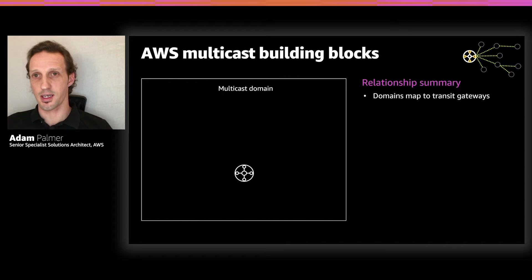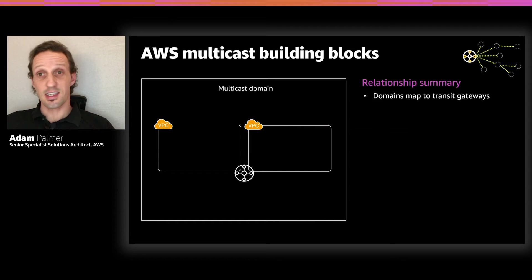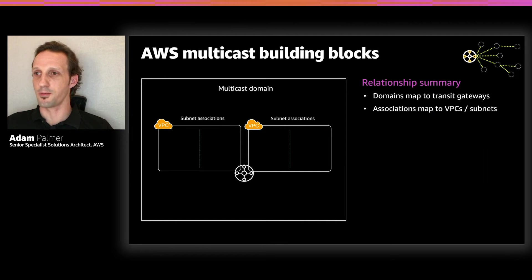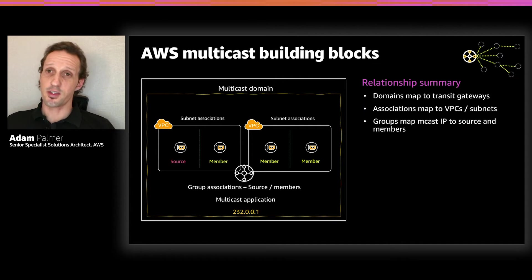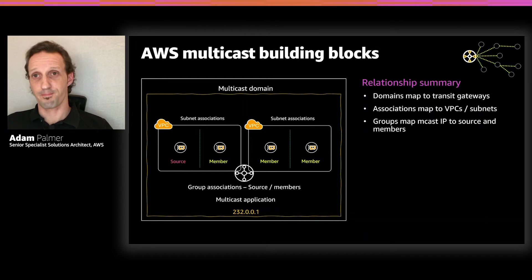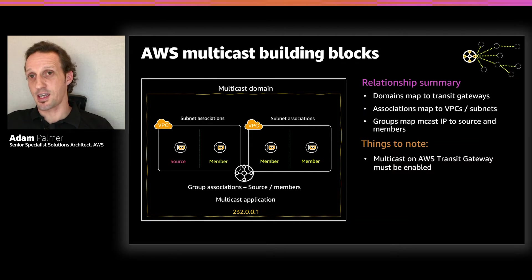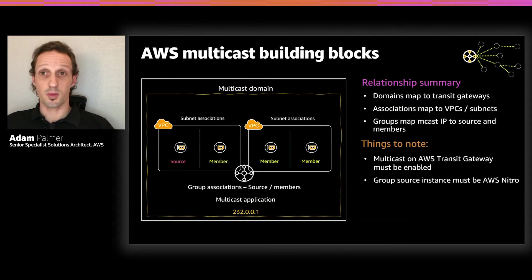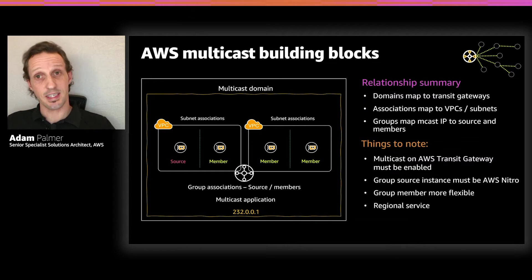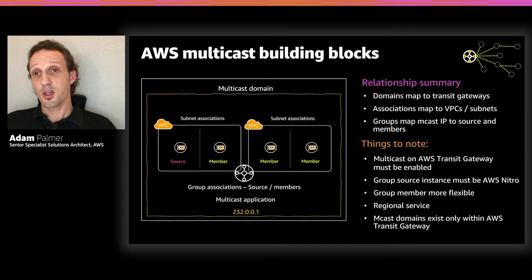You're then able to associate the VPCs you've already attached with your multicast domain, and by extension the subnets inside those VPCs. Once you've been through this process, you reach the group association stage, where you define a multicast IP address — in this case 232.0.0.1 — and define statically a source and some members. Some things to note: you must enable Transit Gateway multicast services when you create that Transit Gateway. If you want to send multicast packets to the group, your group source must be a Nitro-based instance, but members don't necessarily have to be. Transit Gateway being a regional service, multicast is inherently a regional service as well.